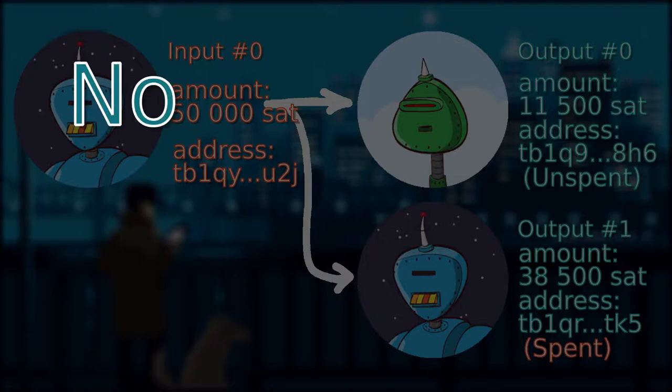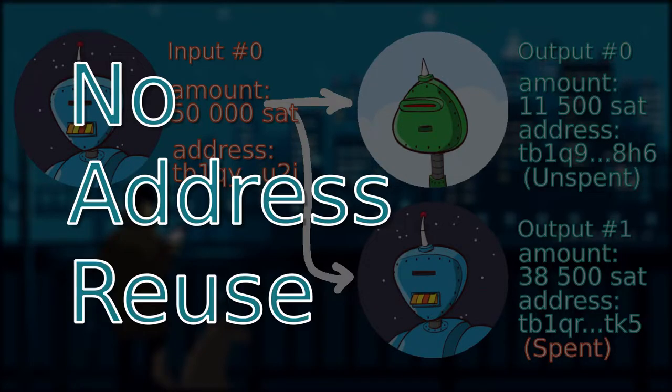By using a different address for every transaction, an outside observer will have a harder time identifying the entities in those transactions.